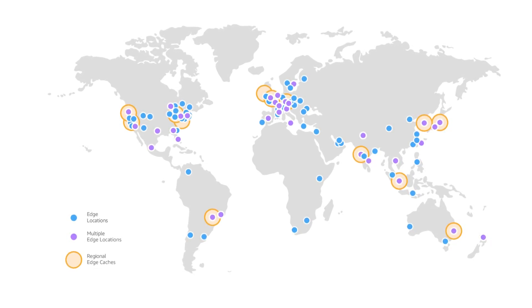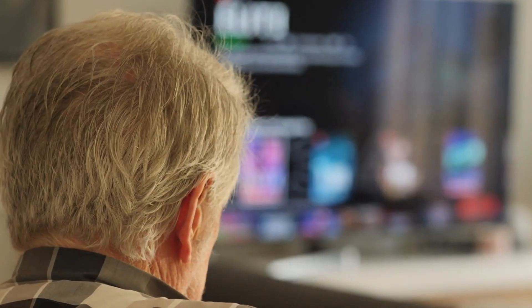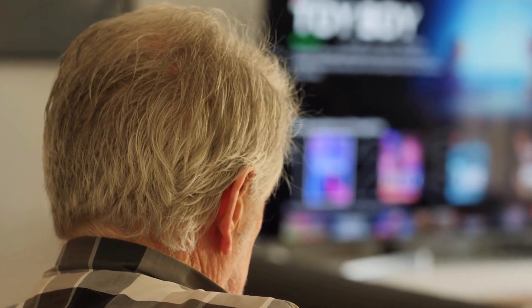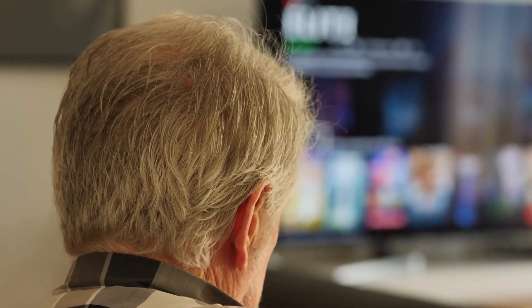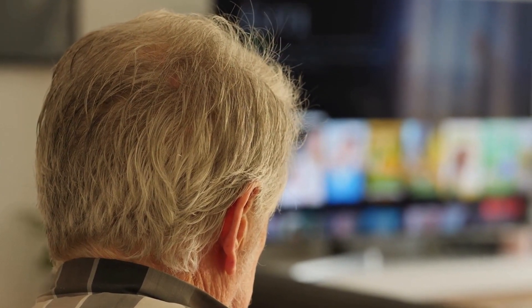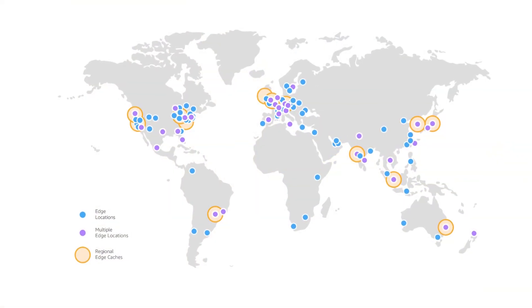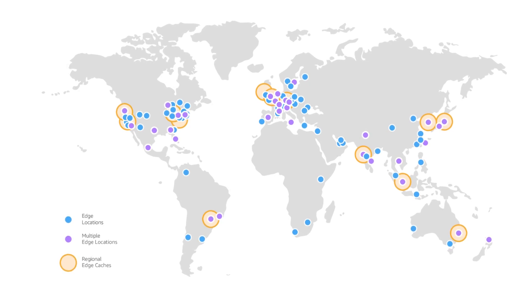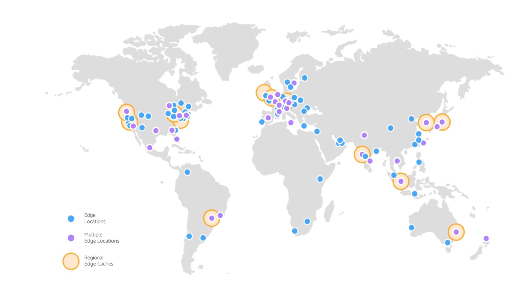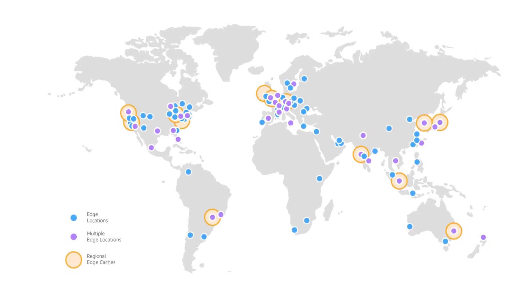To make this easier to comprehend, let's use a real-life example. Imagine that Netflix has a global infrastructure that spans regions, availability zones, and edge locations worldwide. Regions will be a large geographical area such as North America, Europe, or Asia. Each region will consist of multiple availability zones. For instance, in North America, there might be availability zones in New York, Los Angeles, and Chicago. These availability zones are isolated data centers within the region.